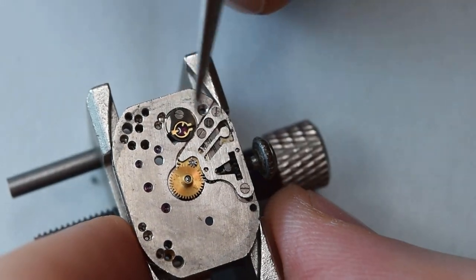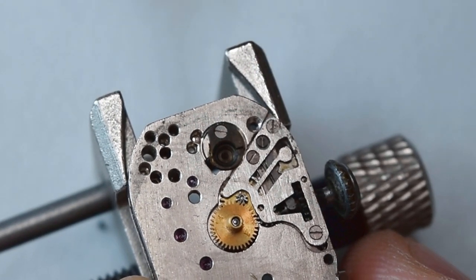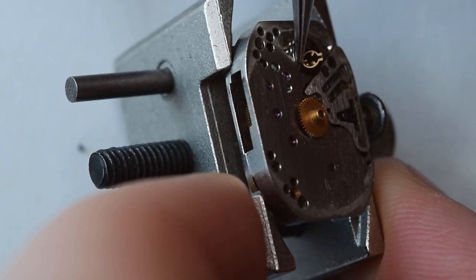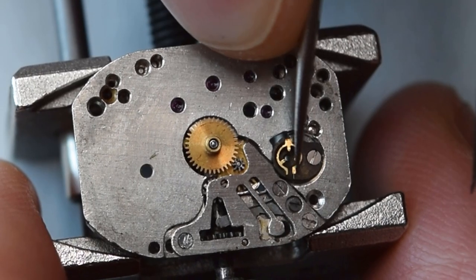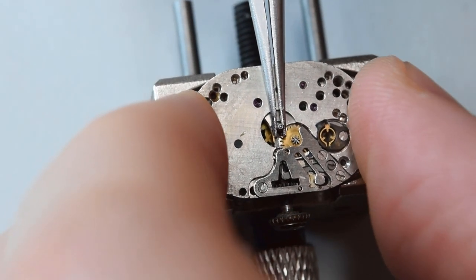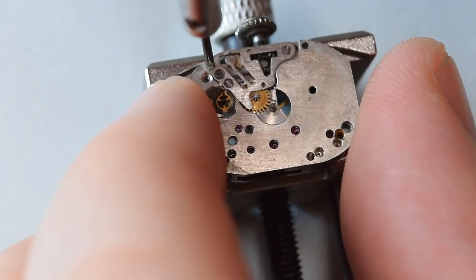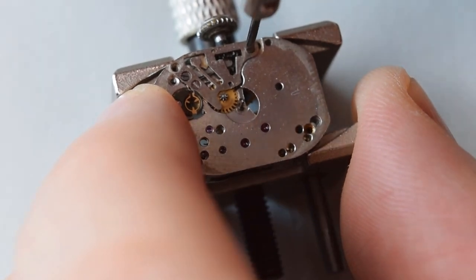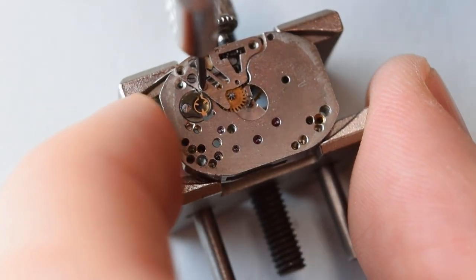Now the jewel from the balance wheel on the dial side. We'll use Rodico, and this one came out very easily. It's pretty dark. Let's secure the spring here. Now the third wheel and the cannon pinion. I'm doing this in a way that's not perfect—you have to be careful not to bend the center wheel pinion or even break it. You need to pay attention to that.